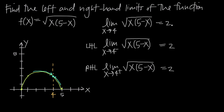That makes sense because the easiest way to solve a limit is by substitution, assuming the function is continuous at that point. Plugging in x = 4: 5 − 4 = 1, then 4 · 1 = 4, and √4 = 2. The value of the function is 2, confirming the general limit equals 2.